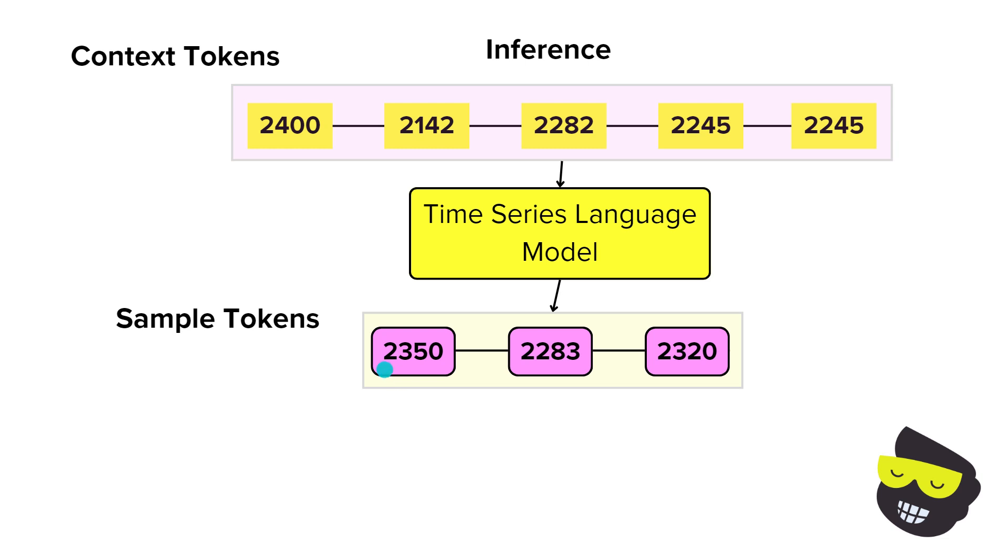These tokens, so the context tokens represent historical data transformed into quantized values. The trained model uses them to generate these sample tokens. So these context tokens could lead to these sample tokens. And these represent the inferred context for the future. And this is what is part of the actual forecast.